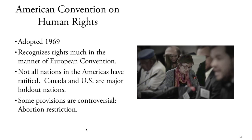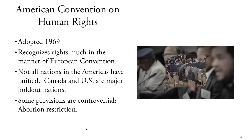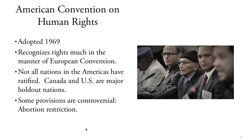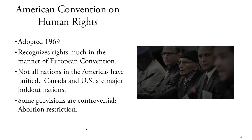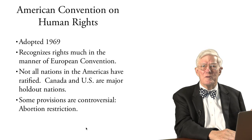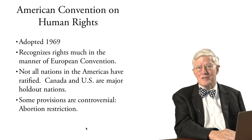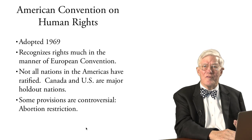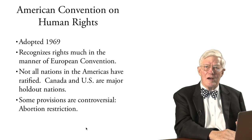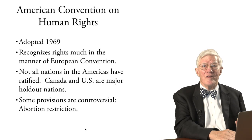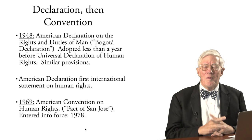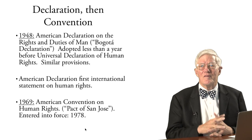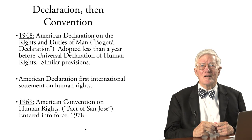In 1969 the American Convention on Human Rights was adopted and entered into force in 1978. The American Convention recognizes many of the same rights seen in the European Convention, though with slightly different language. Not all nations in the Americas have ratified it — notable holdouts are Canada and the United States.